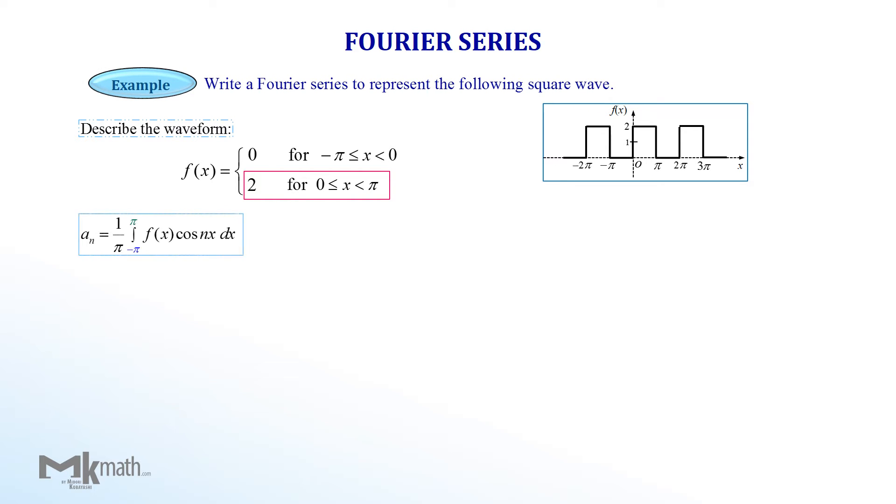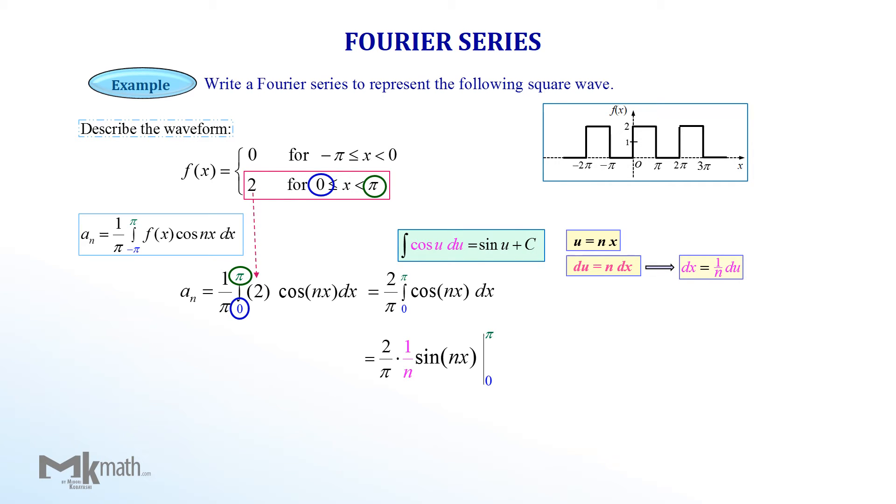We then get the coefficient of cosine terms a sub n from the formula. We set up the integral as the same as a0 but make sure to include cosine nx from the formula this time. We put the constant 2 out from the integral. To take the antiderivative cosine nx, we use the simple substitution method with u equal nx and du equal n dx. Using the formula to get 2 over pi times 1 over n times sin nx with the upper limit pi and the lower limit 0.